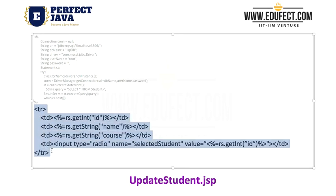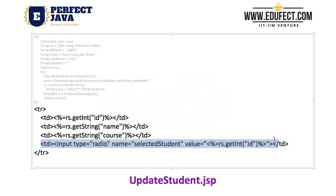We are displaying all the students in a table, and one thing we have added here is an input of type radio with name equal to 'selectStudent' and the value being the ID of that student. So we have added another column of type radio — radio buttons show up against each student's name so we can select one student. When we select a student, the ID of that student comes in the field named 'selectedStudent' when we look at the next JSP.